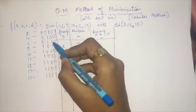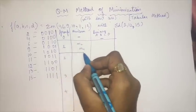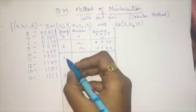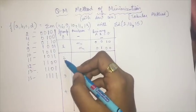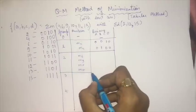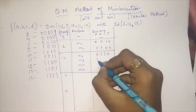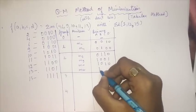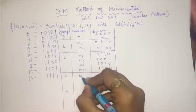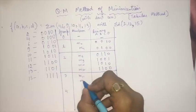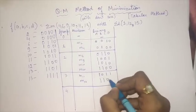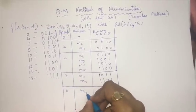We write down the binary numbers for each group. The minterms having two ones are m6, m9, m10, and m12. The minterms having three ones are m11 and m13, which are 1011 and 1101 respectively. The minterm with four ones is m15, which is 1111.